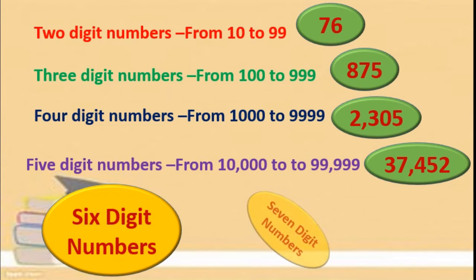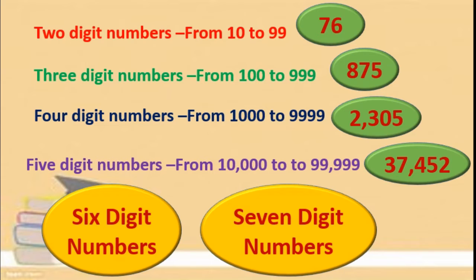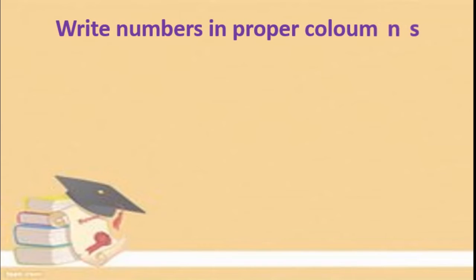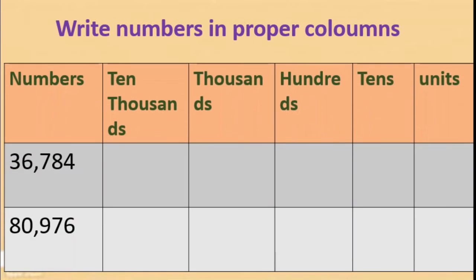Now we will move to six-digit numbers and seven-digit numbers today. Write numbers in proper columns. Here I have taken one example: 36,784. We will start writing from the units — four in units, eight in tens, seven in hundreds, six thousand, and three in ten thousands place.